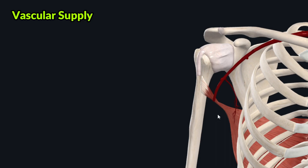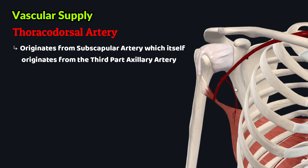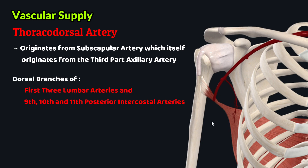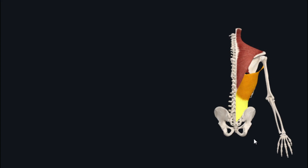The thoracodorsal artery supplies the latissimus dorsi muscle. The thoracodorsal artery originates from the subscapular artery, which arises from the third part of the axillary artery. Some other arterial branches, such as the dorsal branches of the first three lumbar and the ninth, tenth, and eleventh posterior intercostal arteries, also supply this muscle.